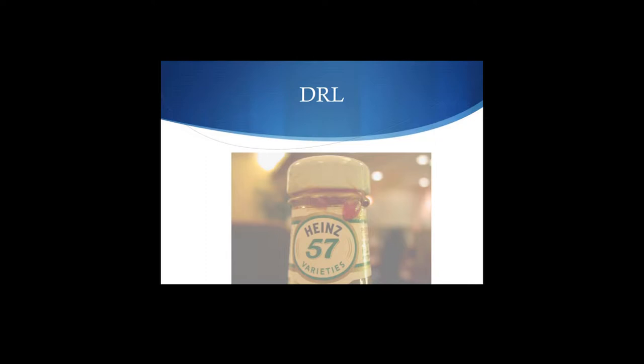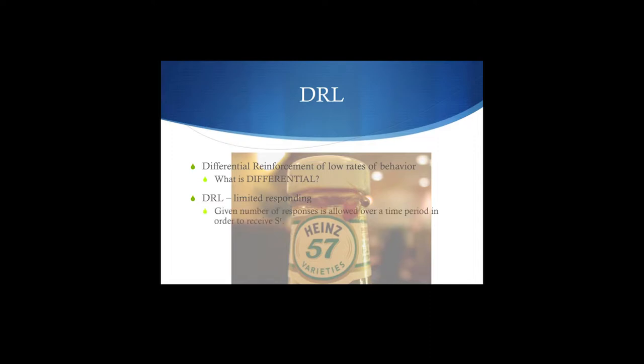Let's look at DRL — differential reinforcement of low rates of behavior. What do we mean by 'differential'? Think about that for a second. What we're really getting at is that we're going to reinforce differently — we're waiting for something particular to happen before we reinforce. That's all we mean by differential here. With DRL, we can focus on a limited responding situation: a given number of responses is allowed over a time period.